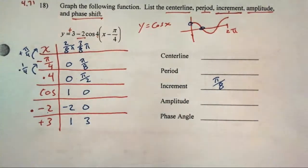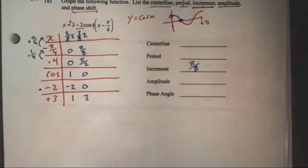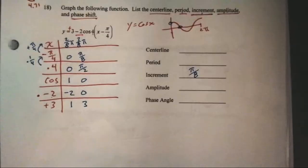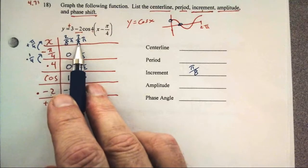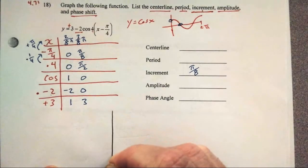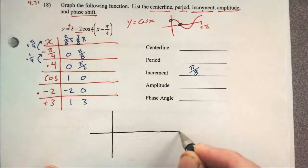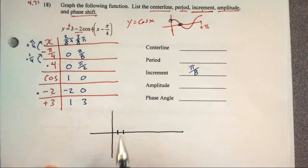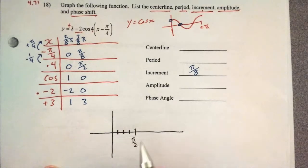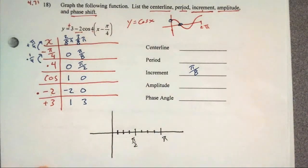For the graph, I want increments going 2 eighths, up an eighth, and on. A common mistake is to start the axis at 2π/8 — you can't do that. The axis must start at 0 and go: 1/8, 2/8, 3/8, 4/8 (that's π/2), 5/8, 6/8, 7/8, 8/8 (that's π). My y-values need to go up to at least 3.